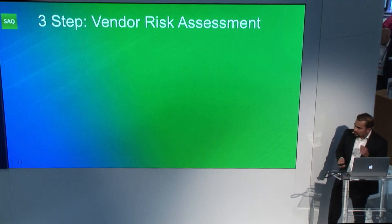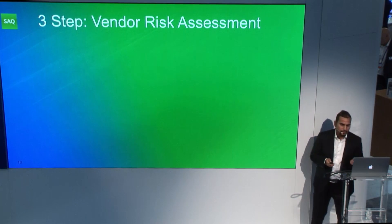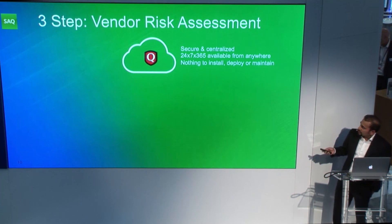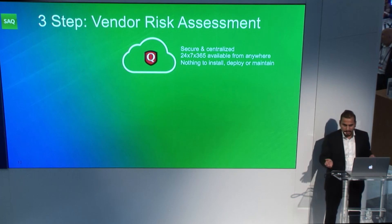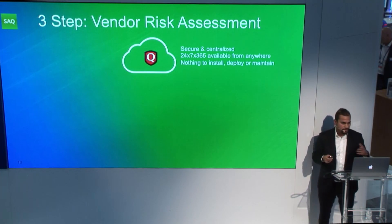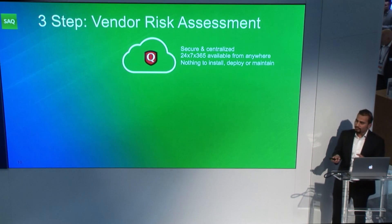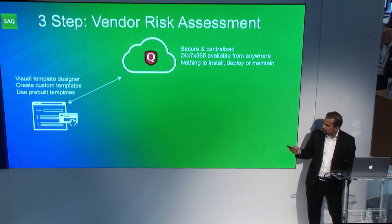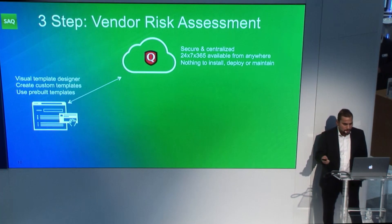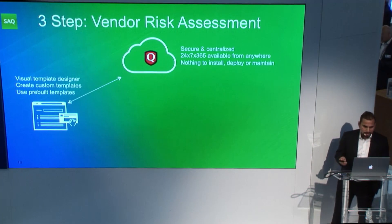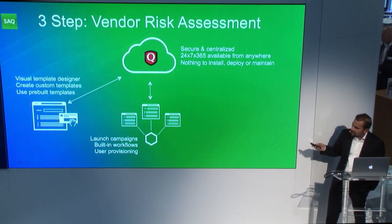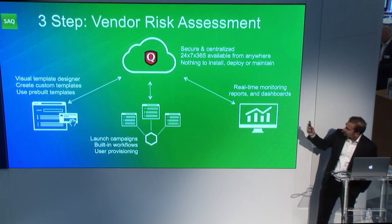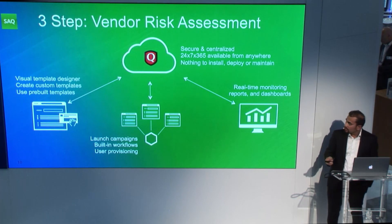We've boiled down the vendor risk assessment process to three easy steps. It starts with cloud-based delivery — all Qualys solutions provided from the same platform, ready to use day one. You use templates out of the box or design your own using our visual designer, launch campaigns leveraging built-in workflows, and start monitoring reports and dashboards in near real time as soon as you launch.